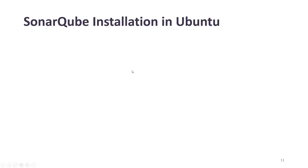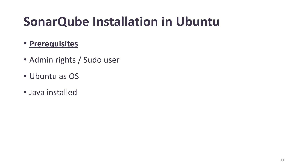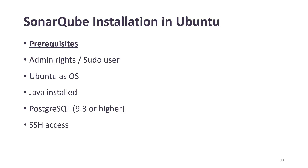In today's video we are going to talk about SonarCube installation in Ubuntu. The prerequisites are: you need admin rights or sudo user access, Ubuntu as the OS, Java installed (I'll be using Java 11), PostgreSQL 9.3 or higher, SSH access, and port 9000 open on the firewall — that's the default port for SonarCube.